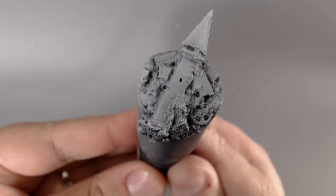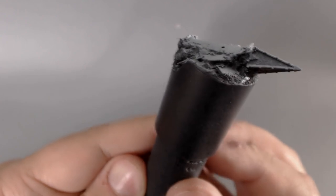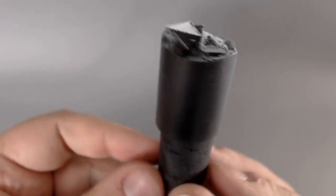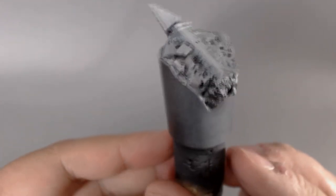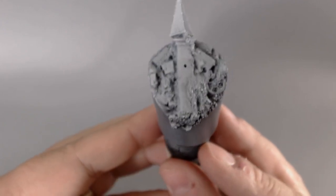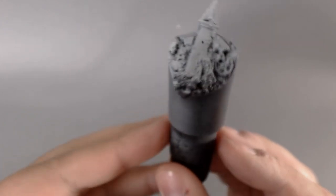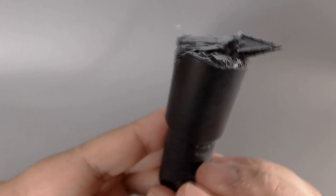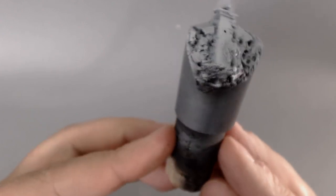Here's the base all primed up. I've gone for black GW rattle can primer and then just a little bit of white over the top. And yeah, that's looking pretty good. The detail's looking nice.